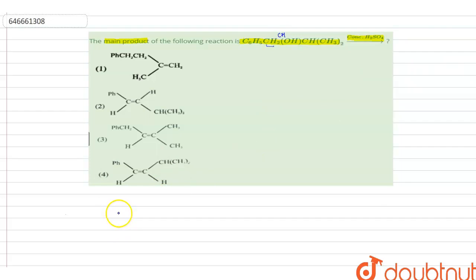So we will write our reactant as C6H5 CH2 CH OH CH CH CH3 twice. For the reaction, we will write it in more simplified form: C6H5 CH2 CH OH CH CH CH3 and CH3.